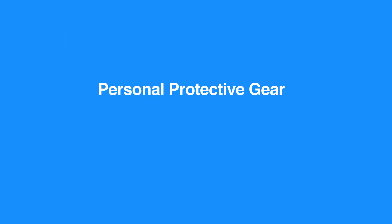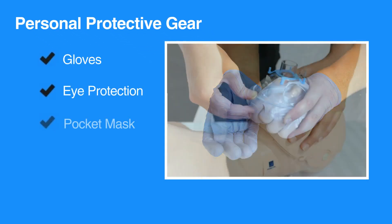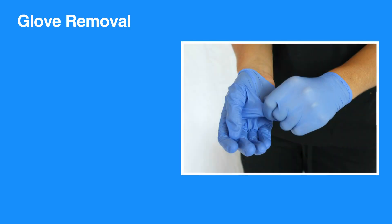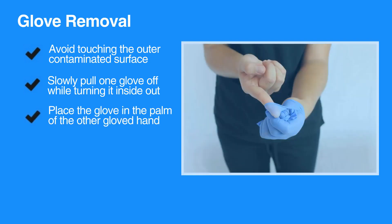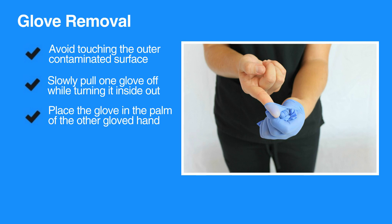Personal protective gear is an important strategy to minimize the risk of blood or bodily fluid exposure. Gloves, eye protection, and a pocket mask should be utilized. Be cautious of latex allergies. When taking off the gloves, avoid touching the outer contaminated surface. Slowly pull one glove off while turning it inside out, place it in the palm of the other gloved hand, then remove the second glove while turning it inside out.